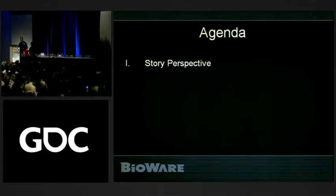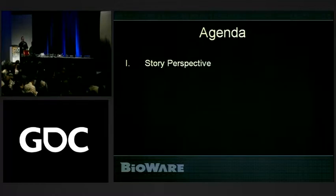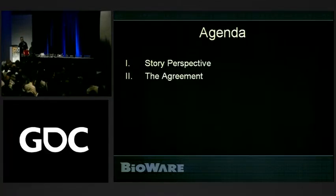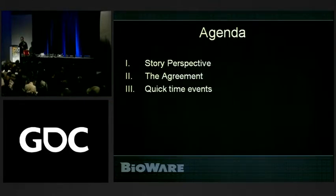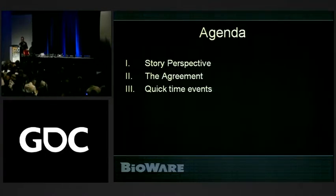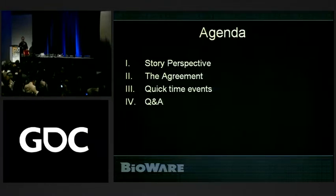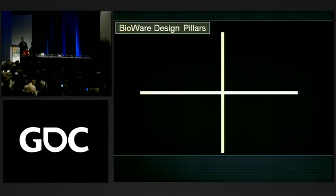Today we're going to talk about a couple of things. First is story perspective — writers understand that story perspective is a very powerful thing, and it gets even more complicated once you add the player to the mix of protagonist and antagonist. The second is the agreement, which is the rules governing interactivity in the cinematic space. And we're also going to talk about quick-time events, which we've added to conversations in Mass Effect. We'll have Q&A at the end.